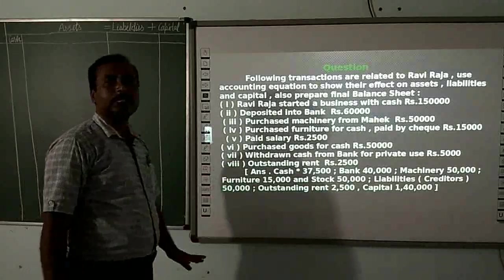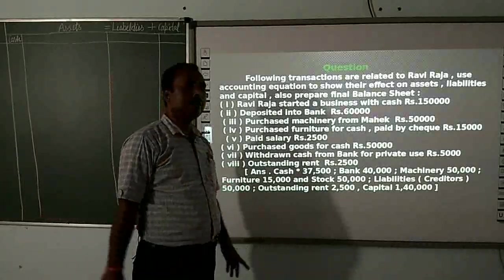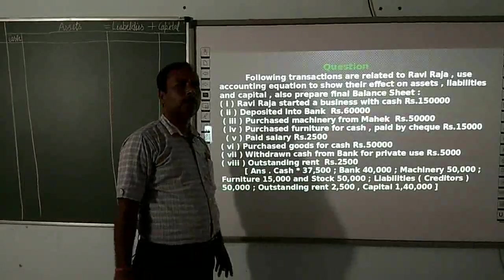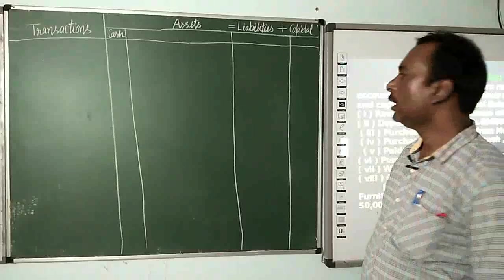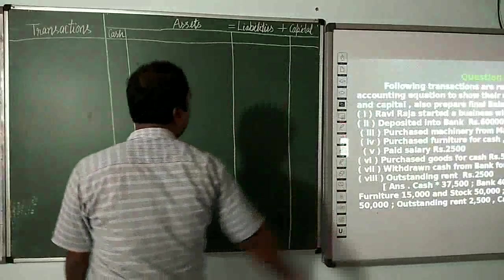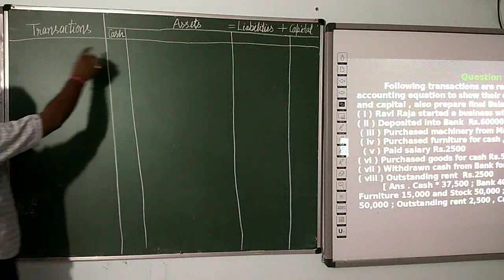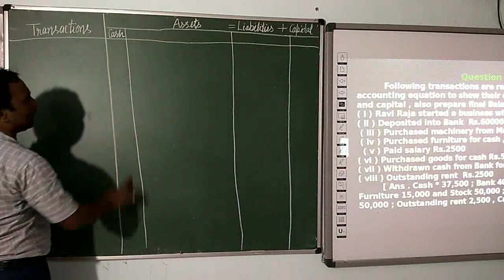So the accounting equation is now prepared. Let me now work through each transaction. For the first transaction, Raviraja started a business with cash, so here I have made a cash column.